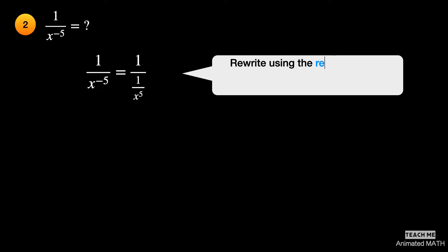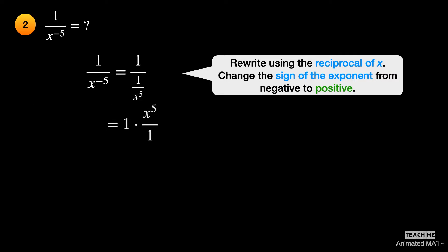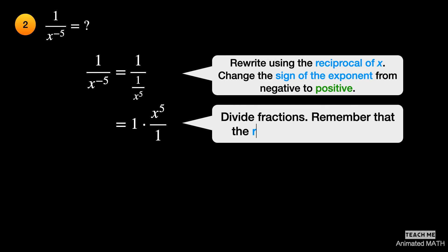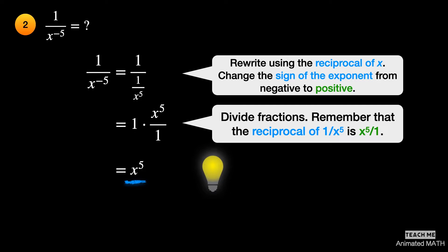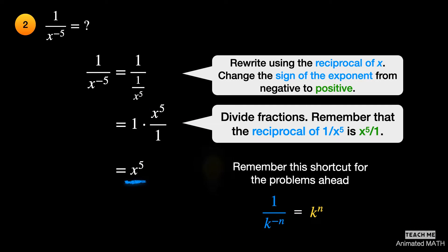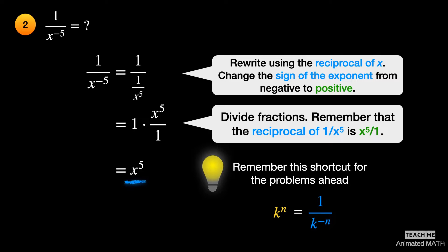Rewrite x raised to the negative 5 as 1 over x to the 5th power. Then divide fractions. The simplified form is x to the 5th power. This is a recurring part of simplifying negative exponents, so always remember: 1 over a number with a negative exponent is equal to that number with a positive exponent. It is also true that a number with a positive exponent equals 1 over the number with a negative exponent.